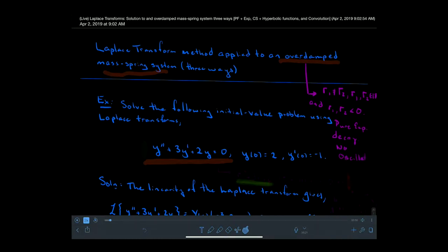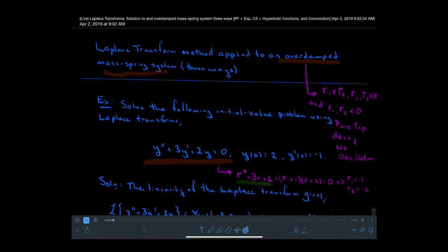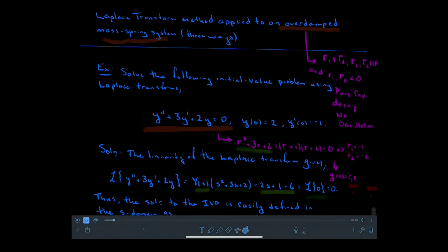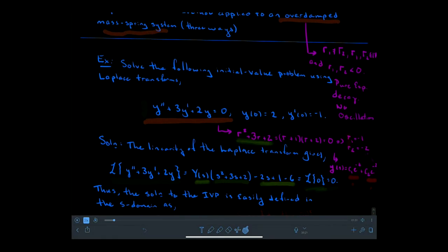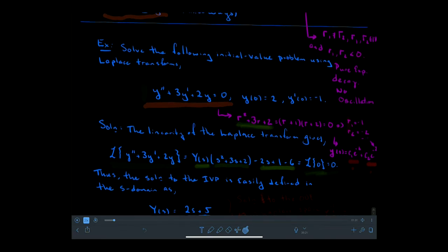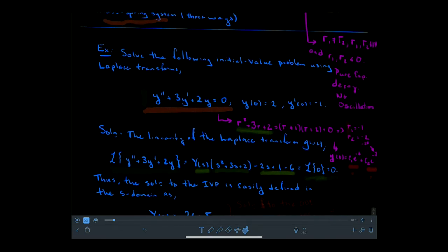No oscillations. More specifically, we have that R squared plus 3R plus 2 equals R plus 1 times R plus 2, set equal to zero. This tells us that R1 equals negative 1 and R2 equals negative 2, and therefore the solution Y of T is the linear combination of these two exponential functions. There's a negative 2T in that corner.